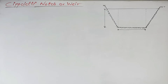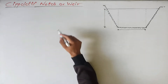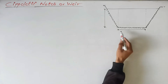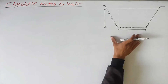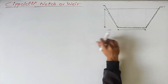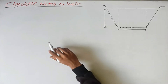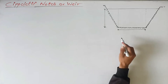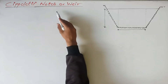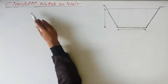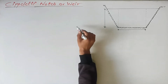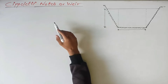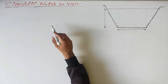Let's start our new topic: sutro wire, also called separative wire or stability wire. You can see here a trapezoidal wire. Let us start by writing the definition.